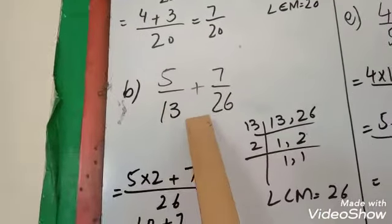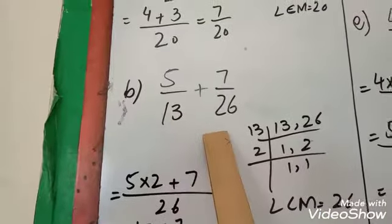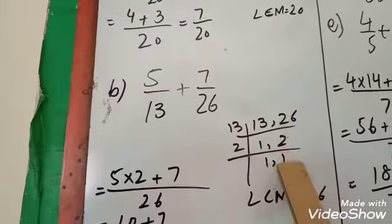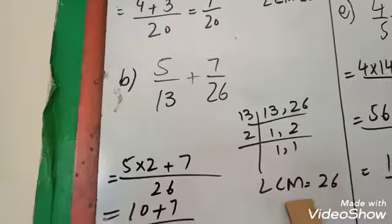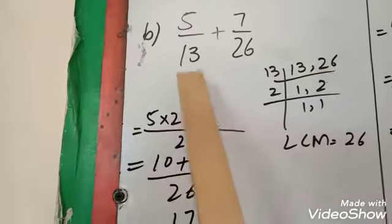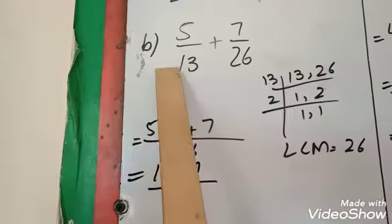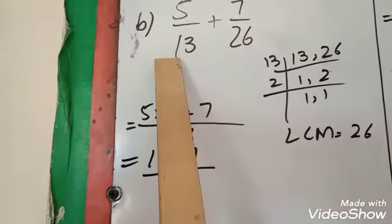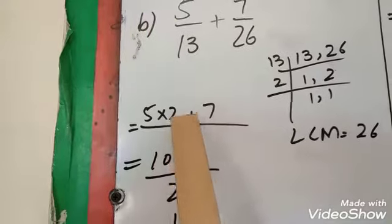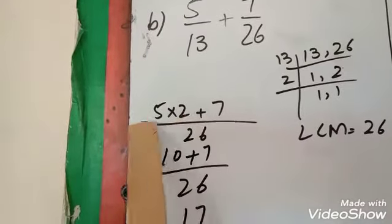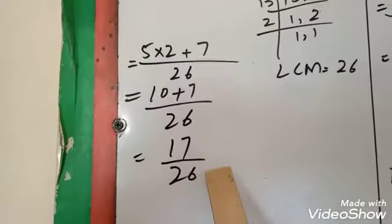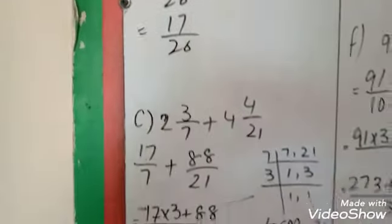Second question: we take LCM of 13 and 26. 13 times 1 is 13, 13 times 2 is 26, so LCM is 26. We write 26 in the denominator. 5 times 2 is 10, plus 7 equals 17. So 17/26 is your answer.